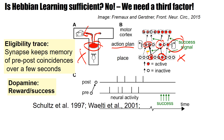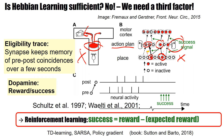Inside the brain the dopamine signal is able to transmit reward or success. Reinforcement learning uses success signals defined as reward minus expected reward. In TD learning the expected reward is the difference between two values, same in SARSA. In policy gradient it could be the reward compared to a running average for expected reward. Different combinations of reinforcement learning algorithms — as seen in the book of Sutton and Barto — all give rise to three-factor learning rules.